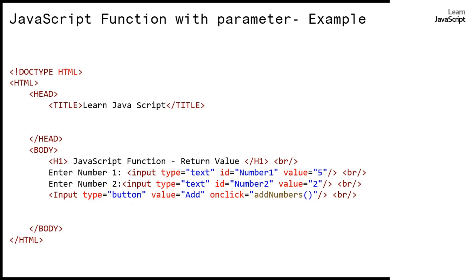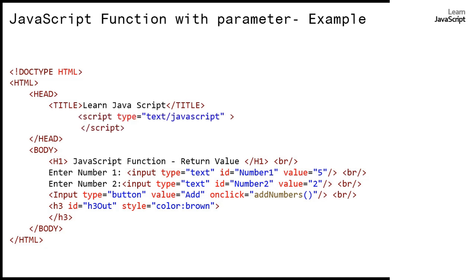Next we have a button with the label 'Add'. When we click the button it produces an onclick event, and the onclick event is set to call the 'addNumbers' JavaScript function. The h3 element is used to output the result; its ID is 'h3out'. We are using a style attribute and specified the color as brown, so the output will appear in brown color in the browser.